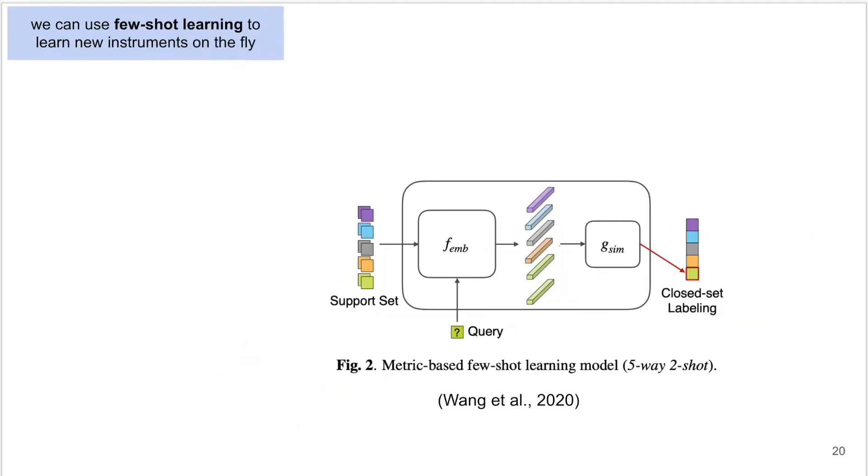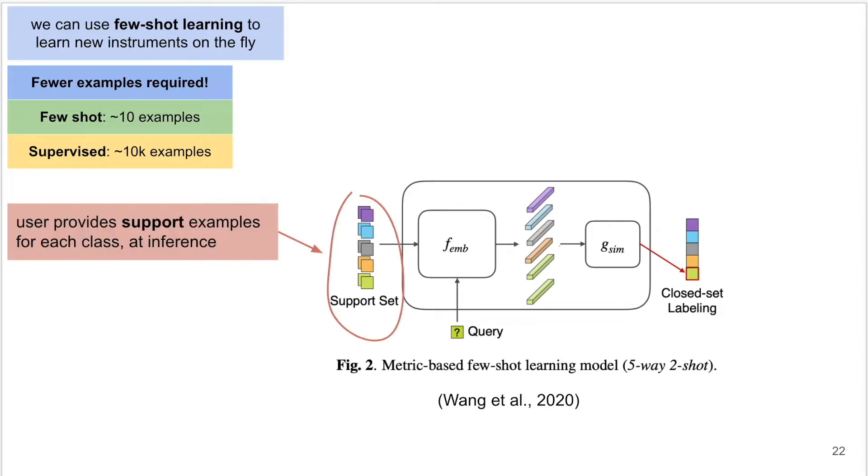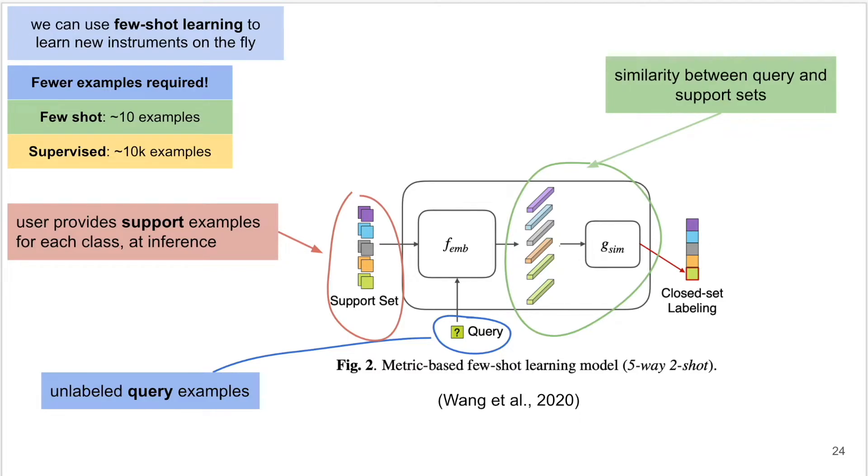Using few-shot learning techniques lets us learn new classes on the fly with only a few examples. In a few-shot learning setup, the user provides a small support set of labeled examples, as well as a set of query examples that the user would like to label. We then use a similarity measure to classify each query example into one of the classes in the support set, akin to nearest neighbor search.